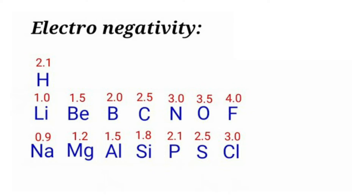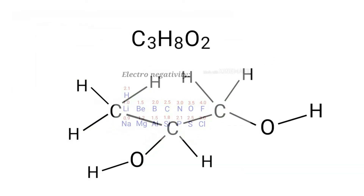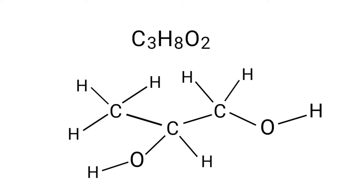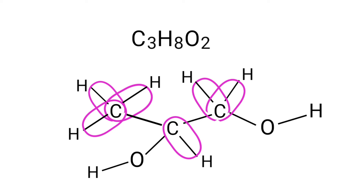As per the electronegativity chart, carbon has more electronegativity than hydrogen. So in C-H bonds, the carbon atoms take the bonds towards itself. Therefore the oxidation number of hydrogen is +1 and the oxidation number of carbon is -1.